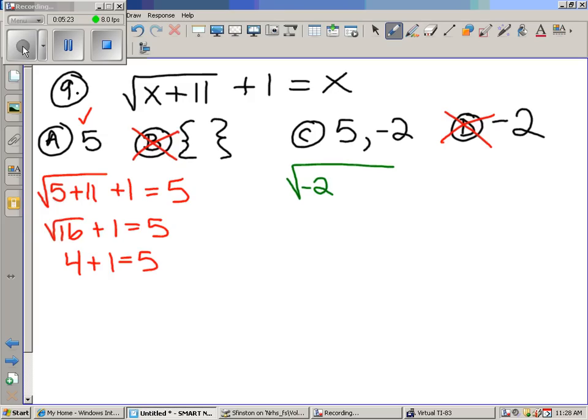Let's throw negative two in here. Negative two plus 11 plus one equals negative two. This is going to be nine plus one equals negative two. Three plus one. Does three plus one equal negative two? No. So you're out. The final answer is just choice A.